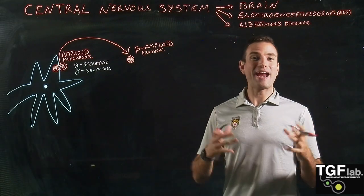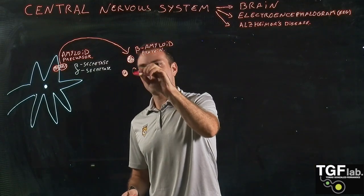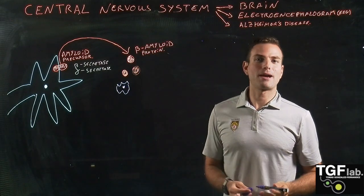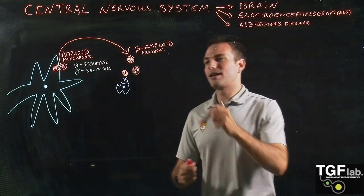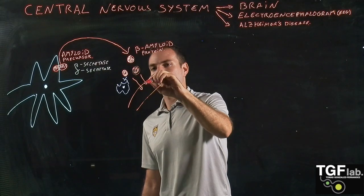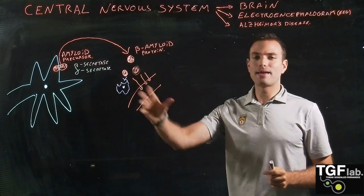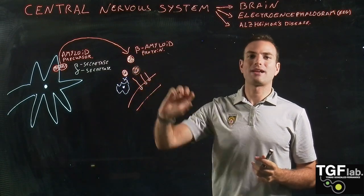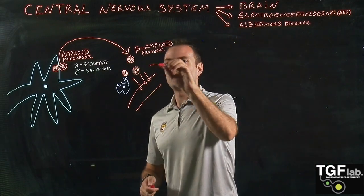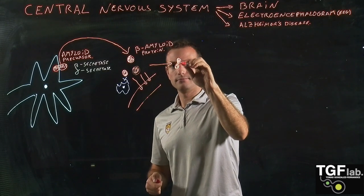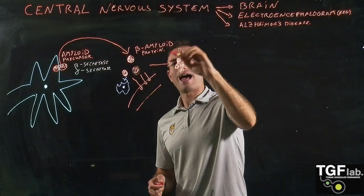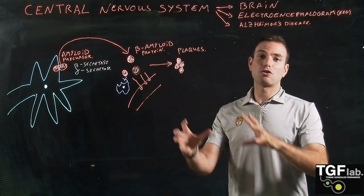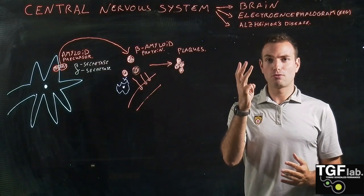The beta-amyloid protein, when our brain is in good condition and when we are young, is going to be cleared by two different systems: by the glial cells — for example, the microglia and the astrocytes — and also through the circulation. But when we get old, one hypothesis is that our vascularization in the brain decreases and our blood vessels cannot clear the beta-amyloid protein as efficiently. When the clearance of beta-amyloid fails, the protein is going to aggregate and create the beta-amyloid plaques.